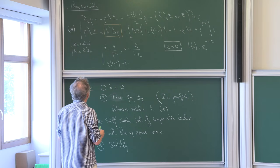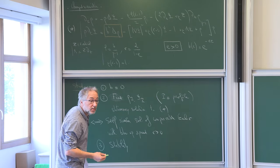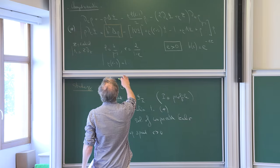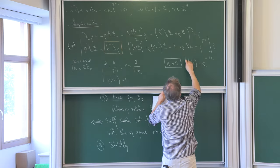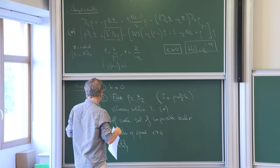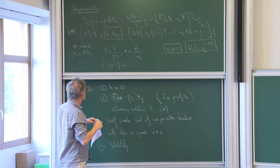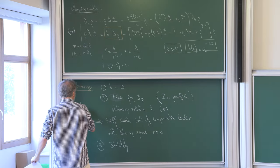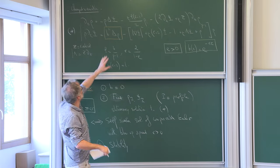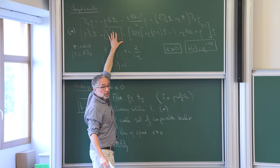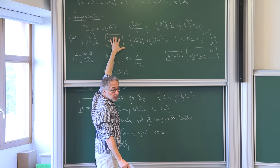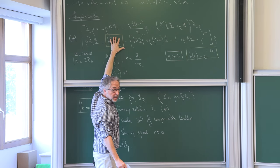A question from the audience: is the stability analysis still under the assumption b equals 0? The answer is: you are absolutely right. Step 1 is b equals 0, and step 2 is also for b equals 0. I find a stationary solution for the simpler b=0 problem, and formally, if the leading order term is a stationary-in-time function rho, then the b term is exponentially small in time, so it's very reasonable to treat it as a perturbation.